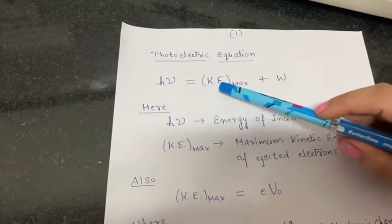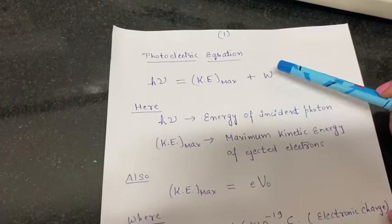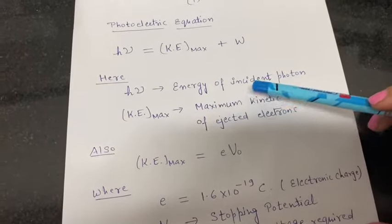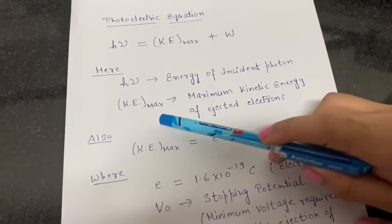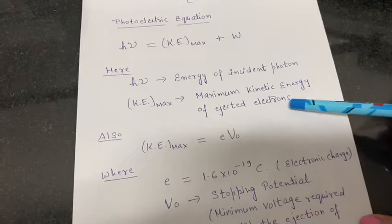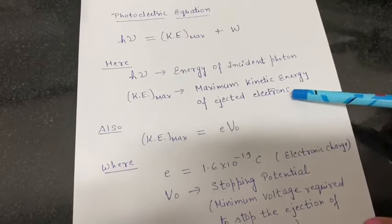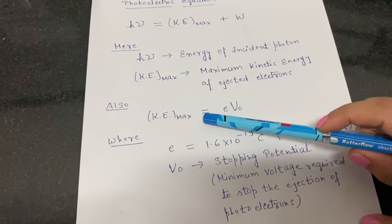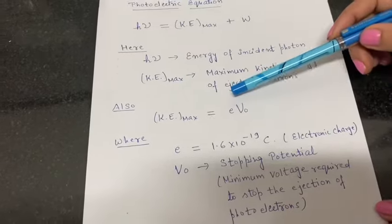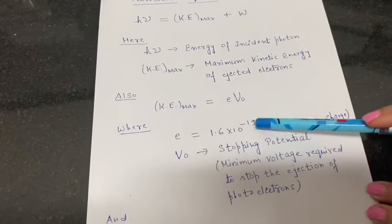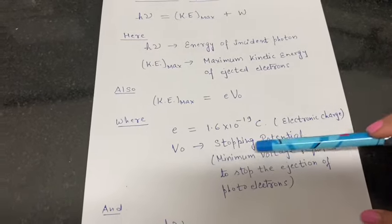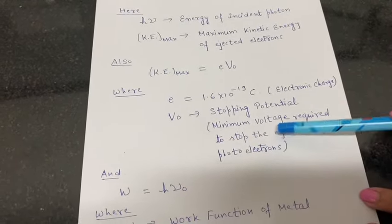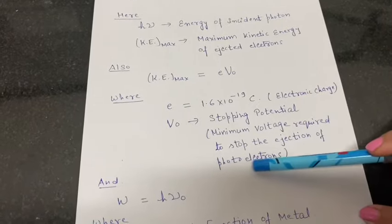The equation of photoelectric effect is: hν = KE_max + W, where hν is the energy of the incident photon, and KE_max is the maximum kinetic energy of the ejected electrons. This maximum kinetic energy can be found by substituting it as equal to eV₀, where e is the electronic charge (1.6 × 10⁻¹⁹ coulomb) and V₀ is the stopping potential — the minimum voltage required to stop the ejection of photoelectrons.